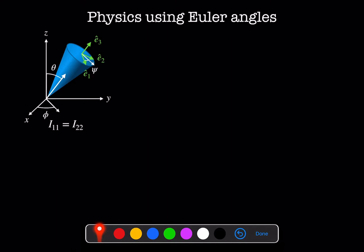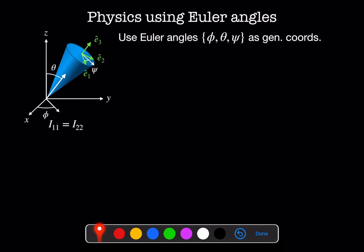I'm Sabeta Matsumoto, and in this video we'll use the Euler angle description of rotations to describe the Lagrangian and the solutions to the equations of motion for the heavy spinning top. Our system generally can have three independent principal moments, but let's consider one that is symmetric, so that I11 is equal to I22. That means E1 and E2 are any pair of orthogonal axes mutually orthogonal to the third principal axis E3. In this setup, psi is the angle the body spins around the E3 direction, theta is the angle that E3 makes with the Z axis, and phi is the rotation around the Z direction. Let's take a look at how the physics works when we take the Euler angles to be our generalized coordinates.